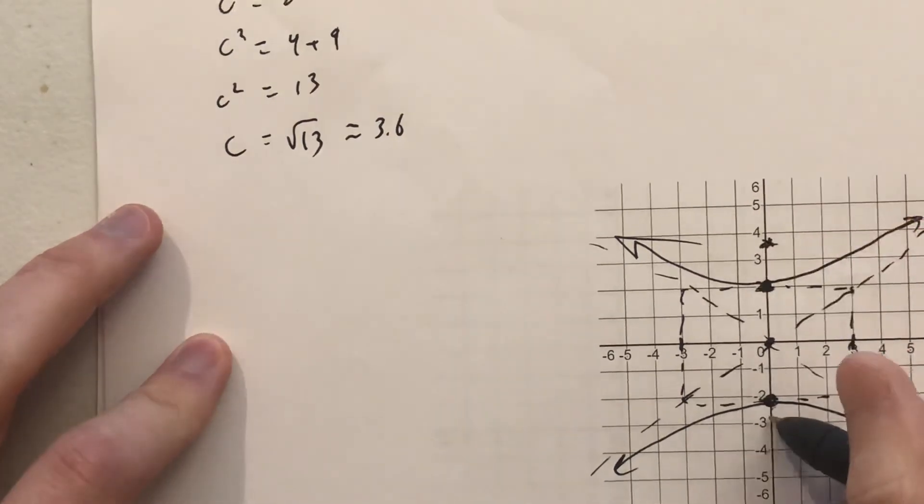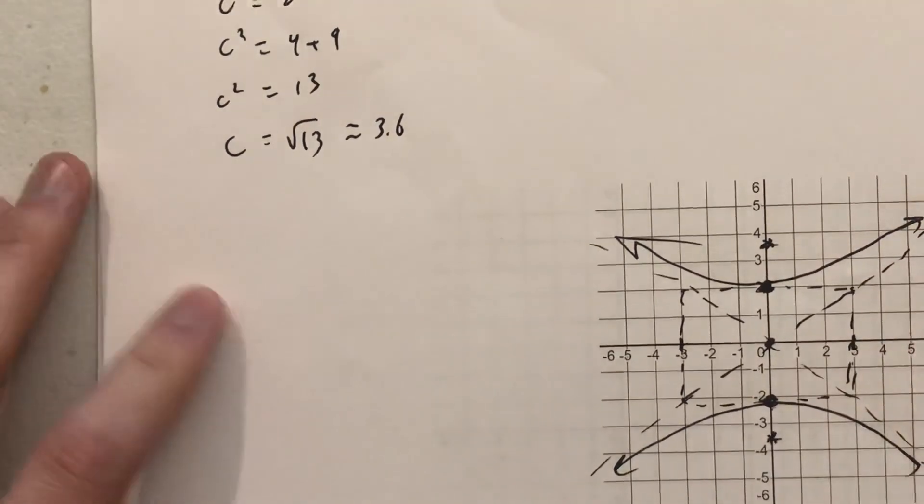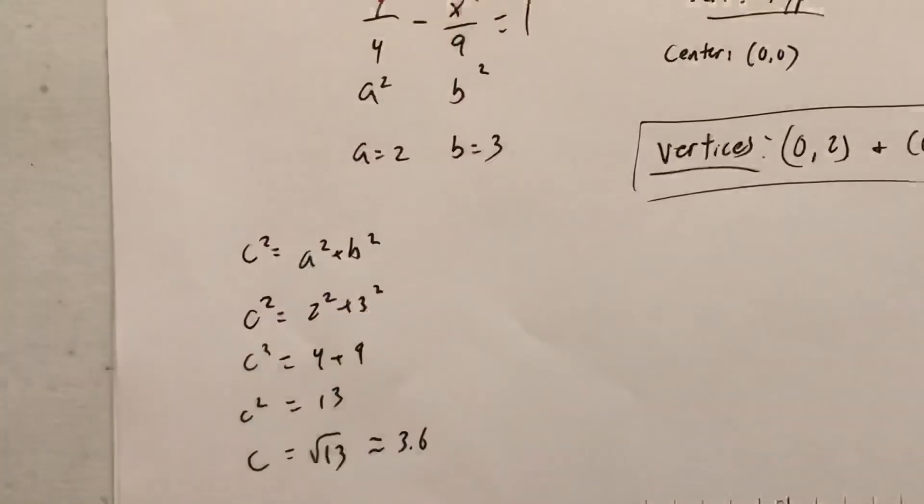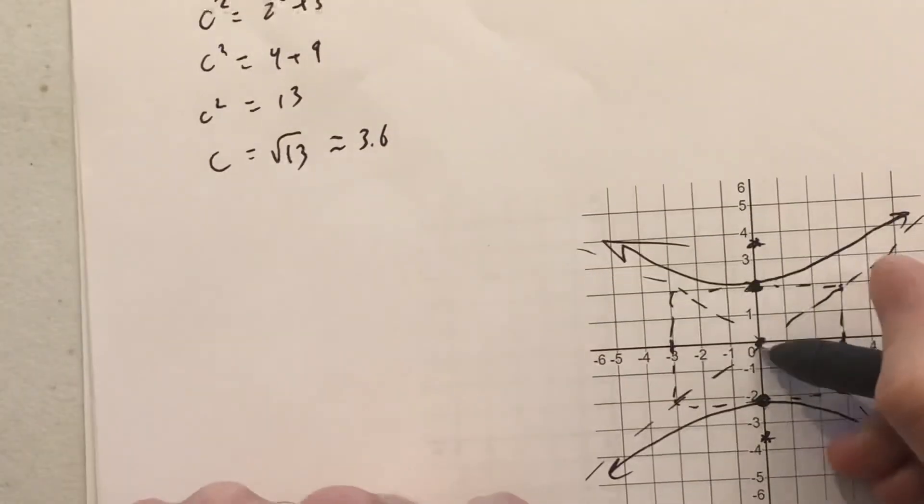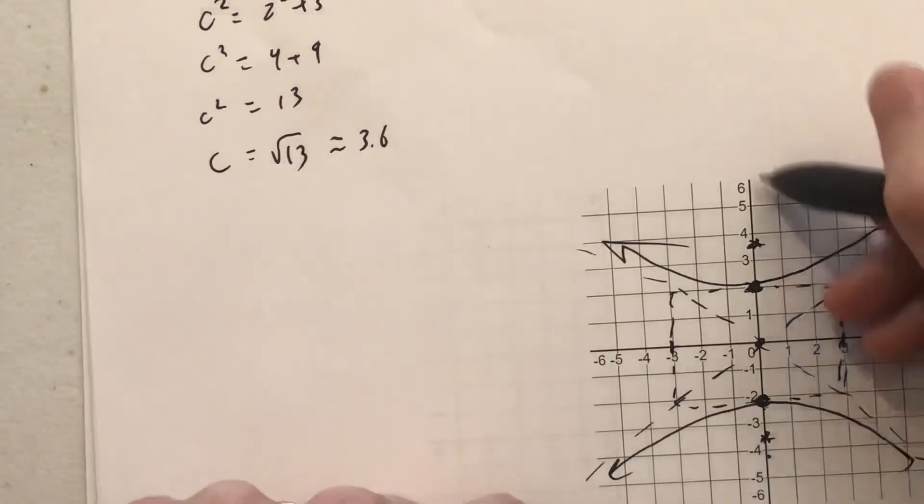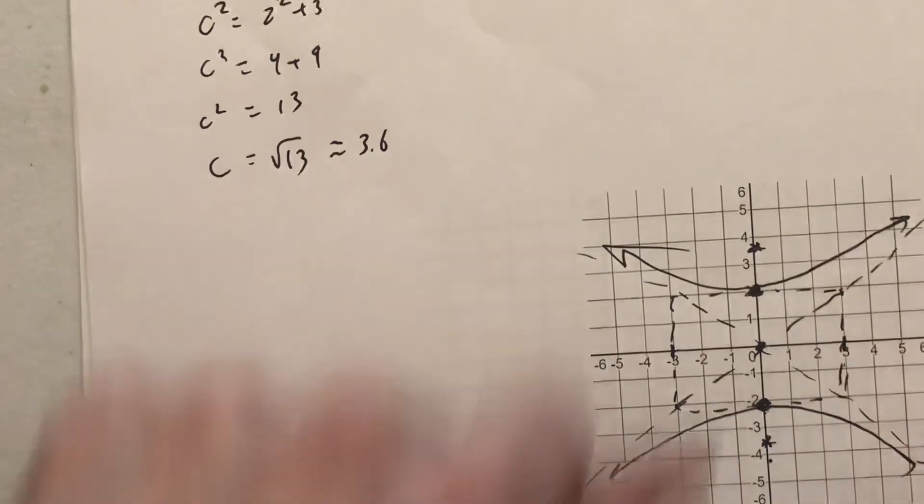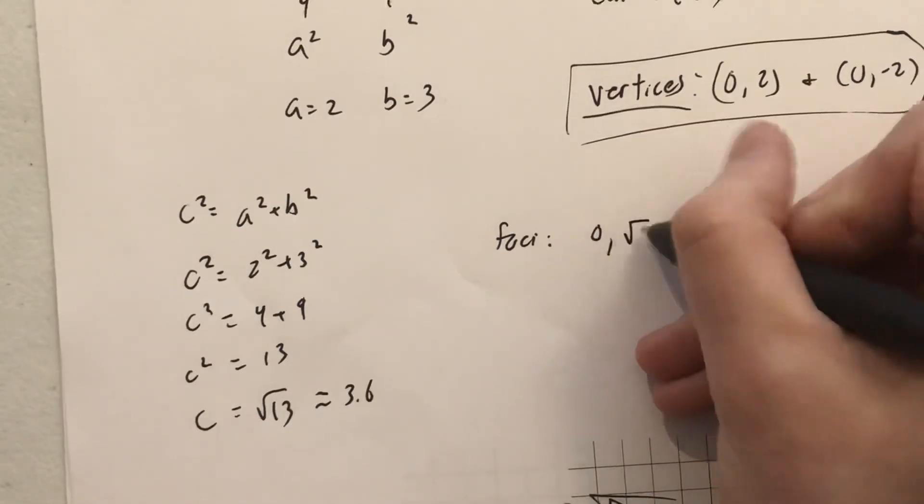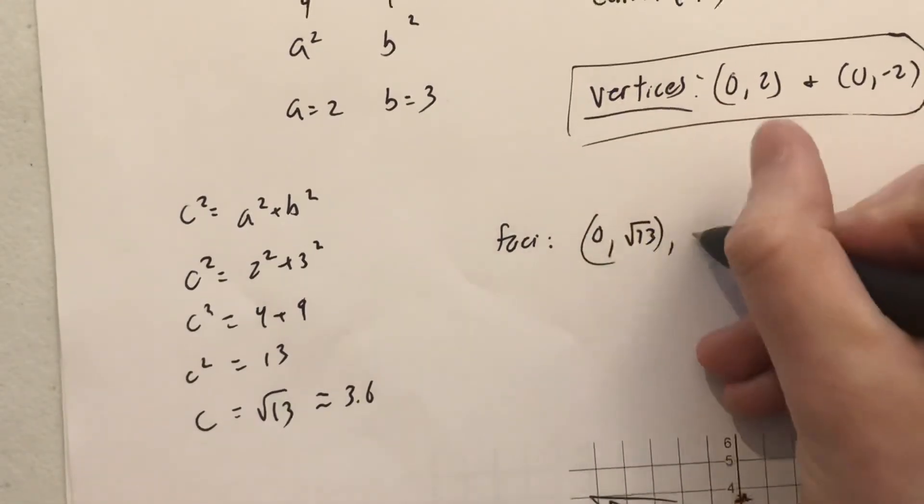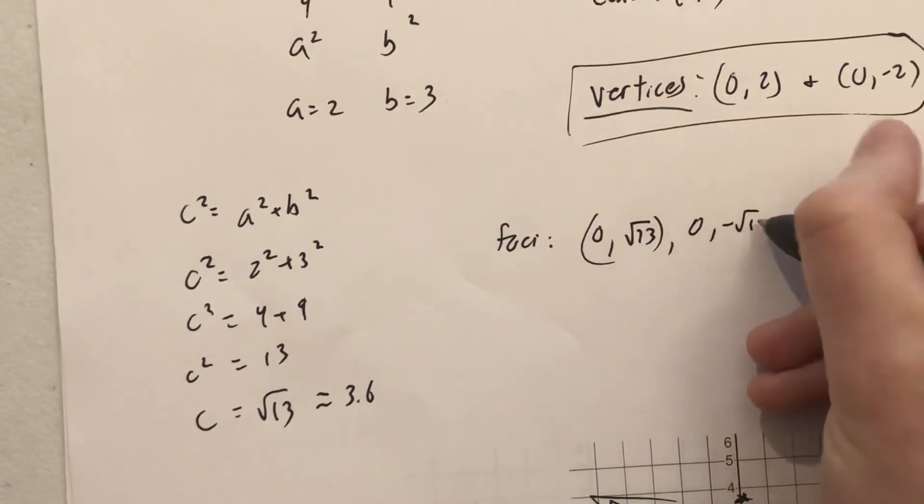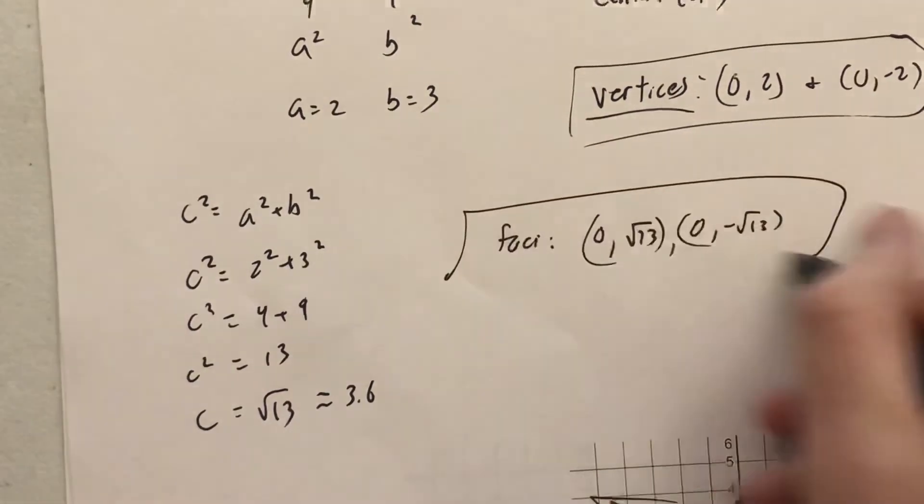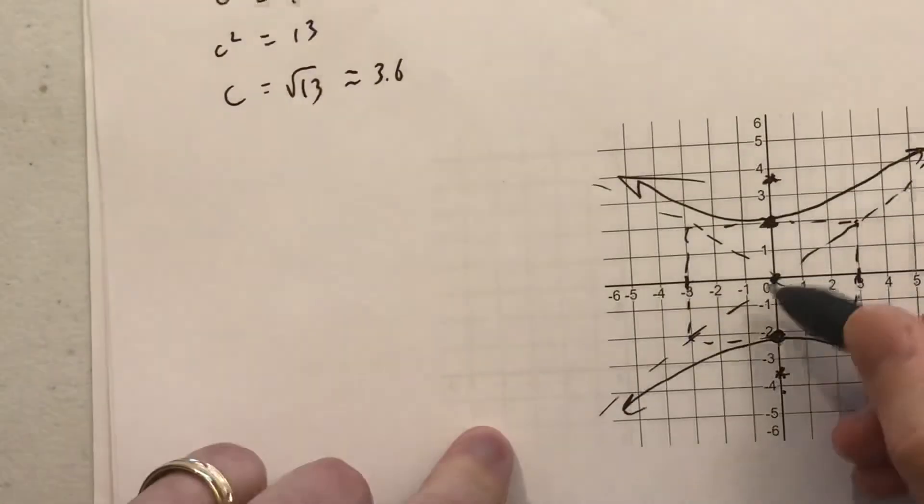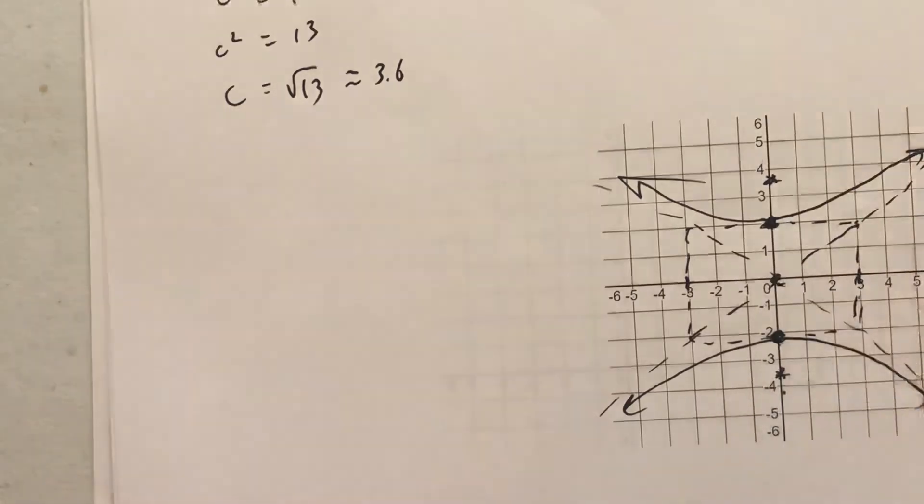Giving you an idea of where they would go if we're plotting them. So 3.6, 3.6 roughly. But to get them exact, we know that the c value is added and subtracted in the y direction, again, on the transverse axis. So our foci are going to be at 0 comma root 13 and 0 comma negative root 13. Plus or minus that from the center of 0 up and down in the y coordinate.